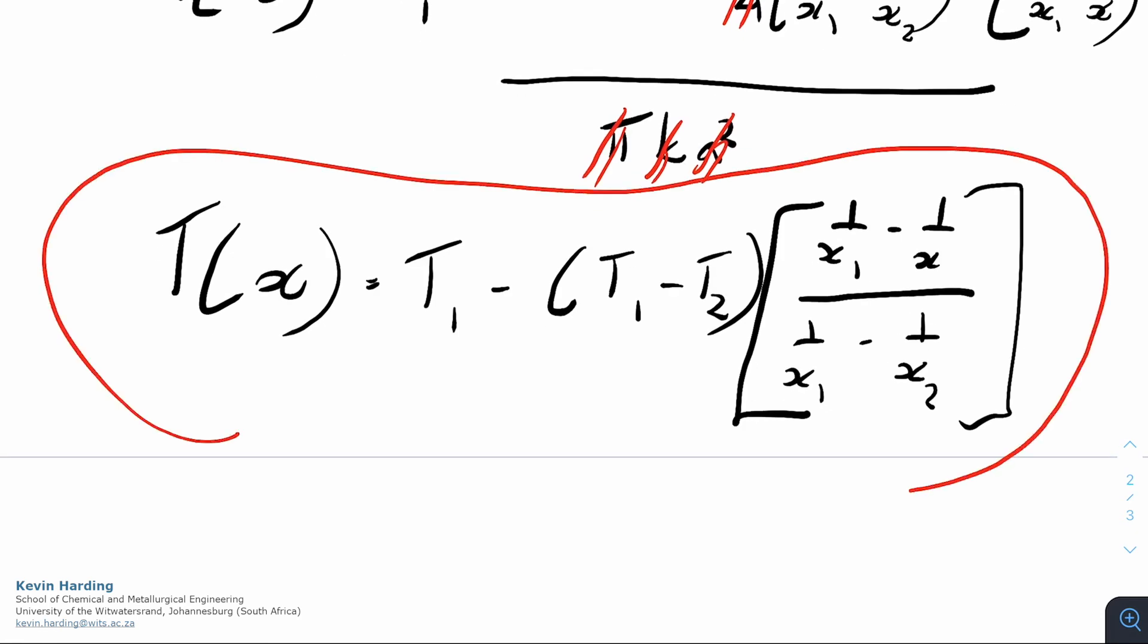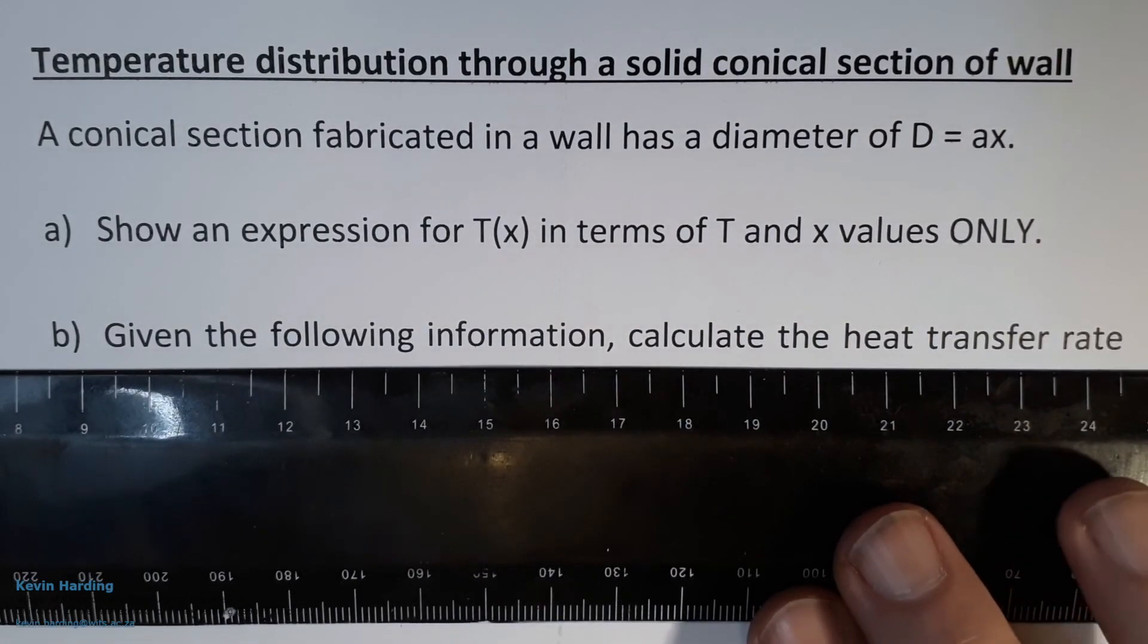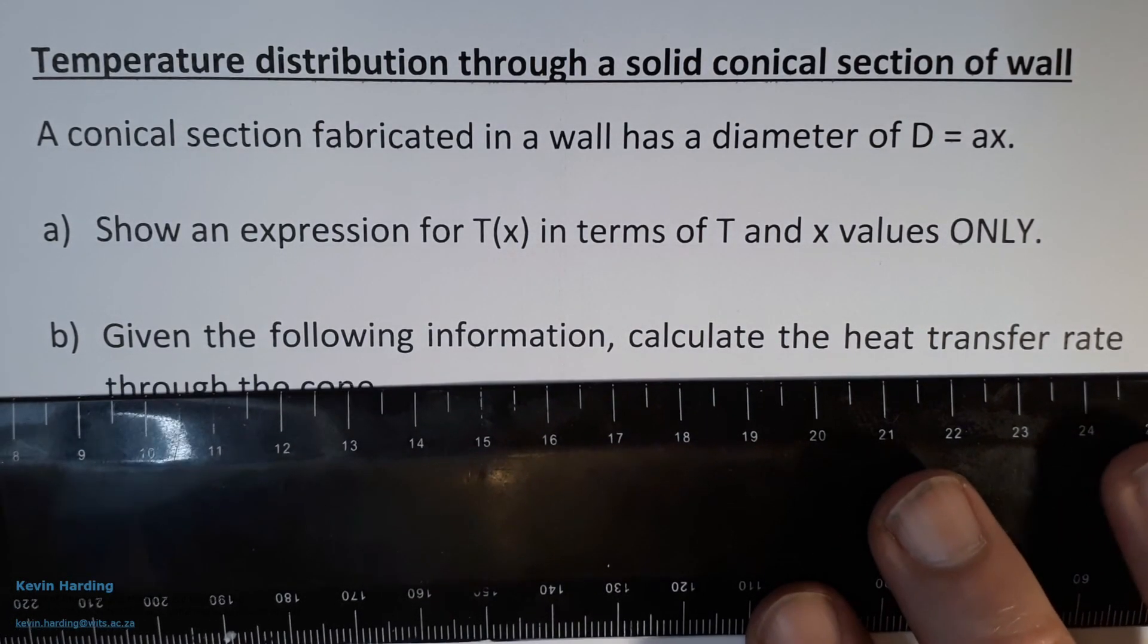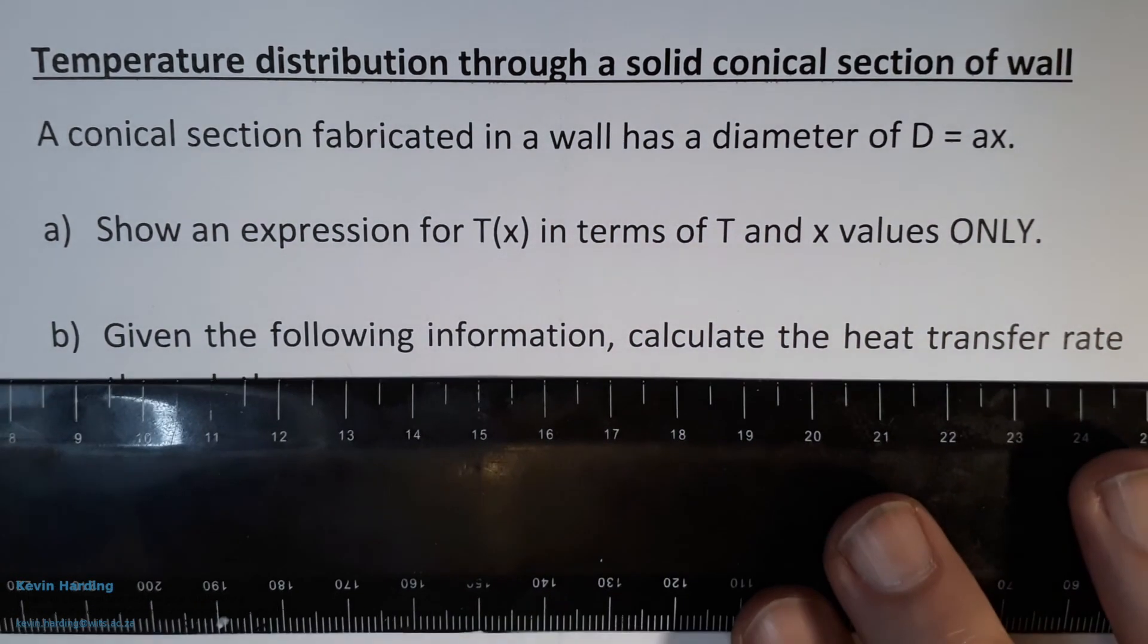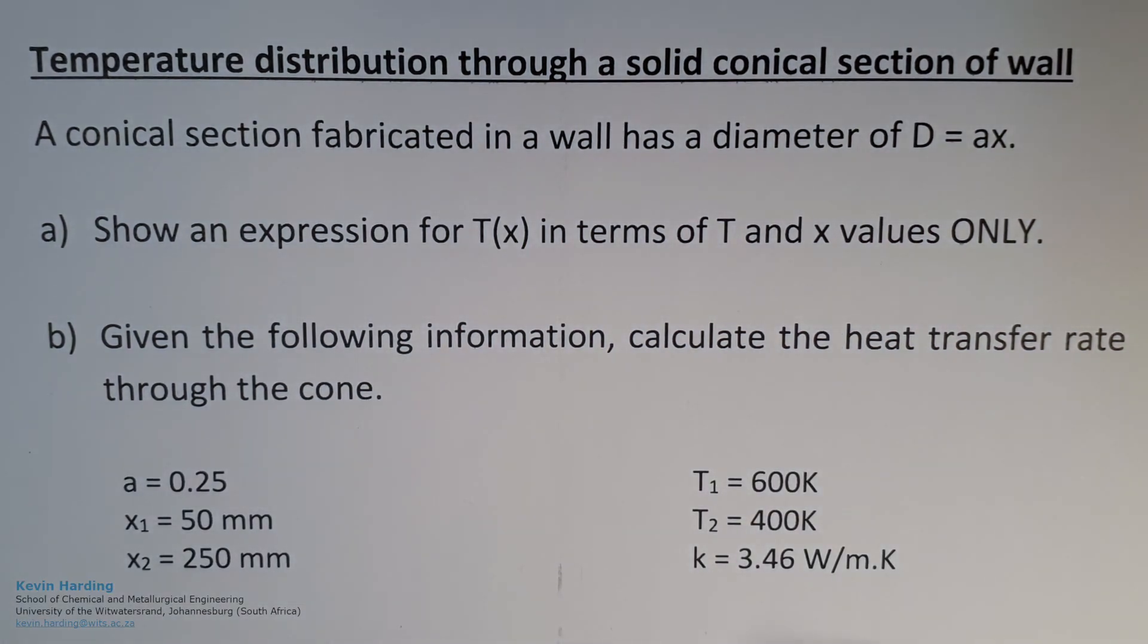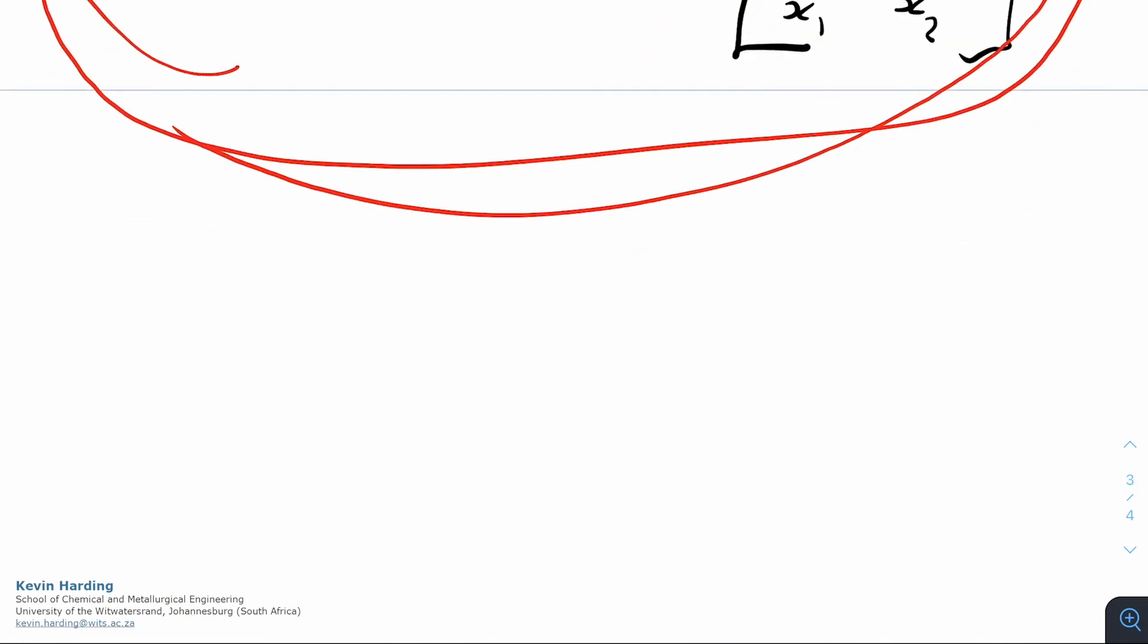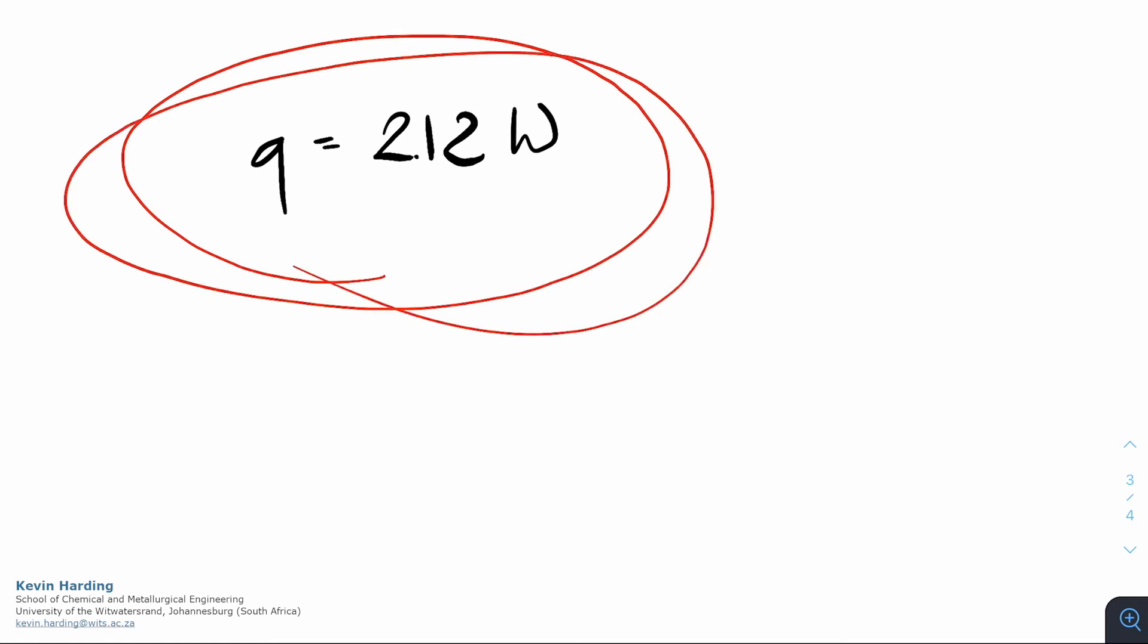Part b now asks, given the information—so we actually didn't need any of this information yet, all of these numbers down here—calculate the heat transfer rate through the cone. So the heat transfer rate is simply going to be q. What we found in our text here somewhere is we had a value for q. I will have the neat version up for you after this video, but you will find, please double check again, that your q value will be equal to 212 watts as your final answer for b.